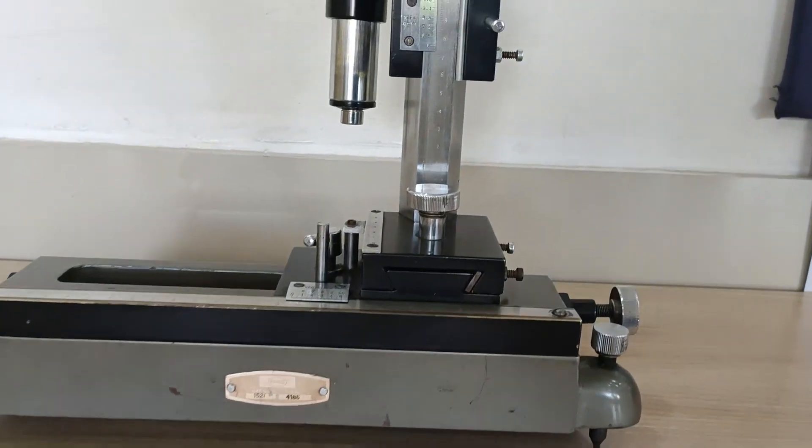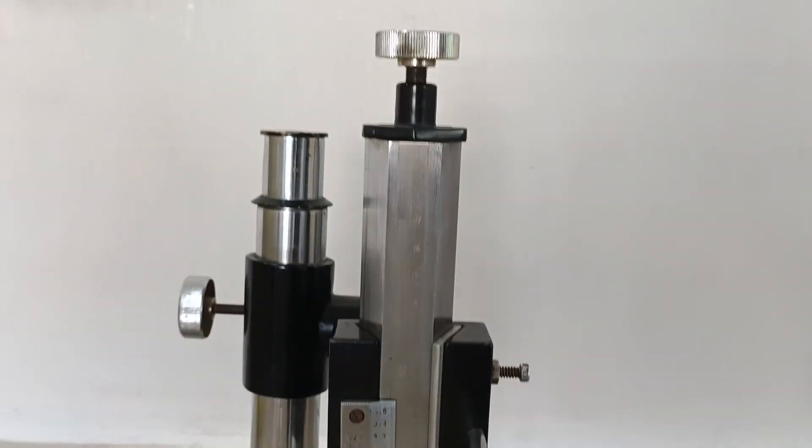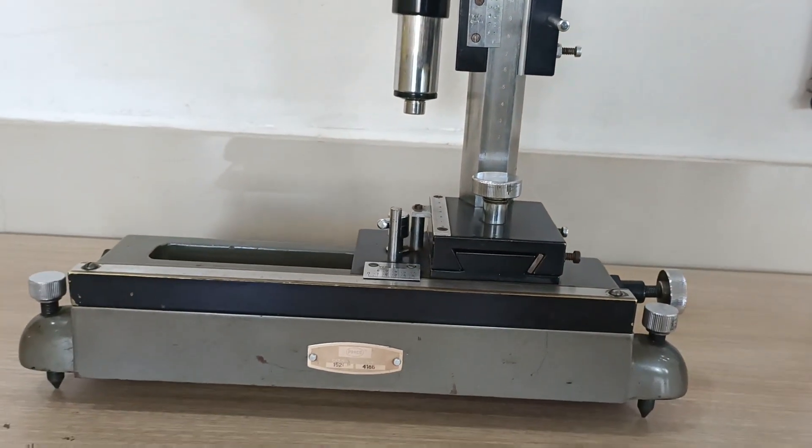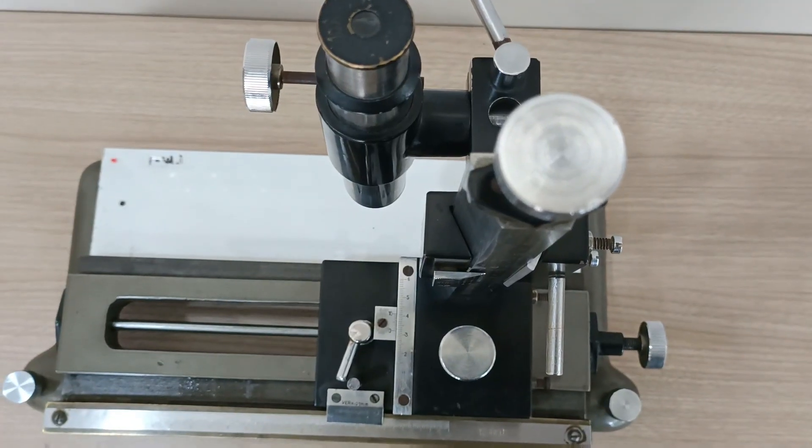This instrument is a traveling microscope and it operates along x and y-axis. Two vernier scales are attached vertically and horizontally.